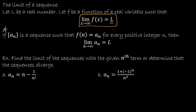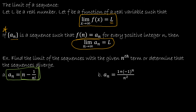This is saying: if you have a sequence that can be written as a function, so f of n equals the nth term of the sequence for every positive integer n, then the limit of the function is the same as the limit of the sequence. So if I'm trying to find the limit of this sequence, I can just find the limit of the corresponding function — and that's good news because we already know how to find limits of functions.